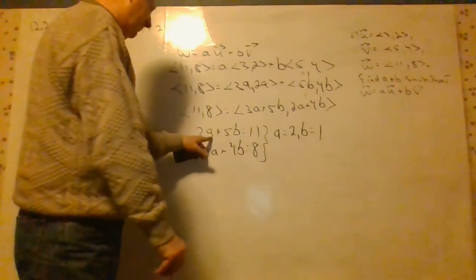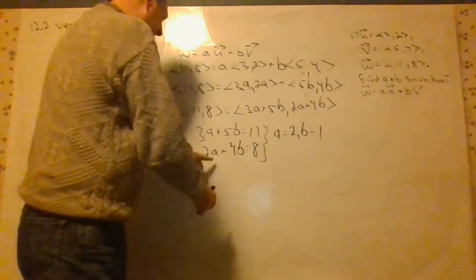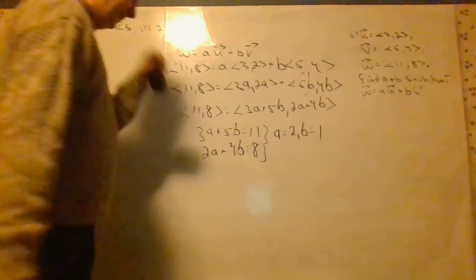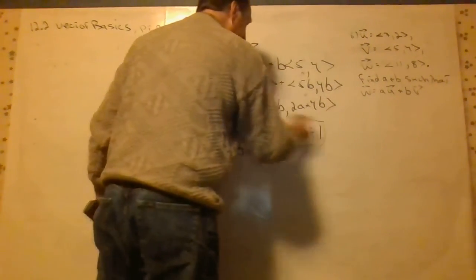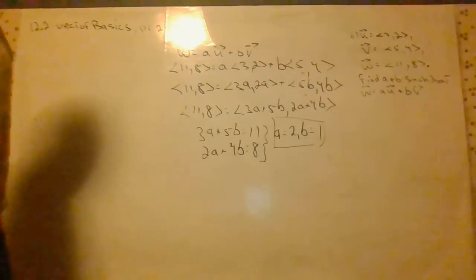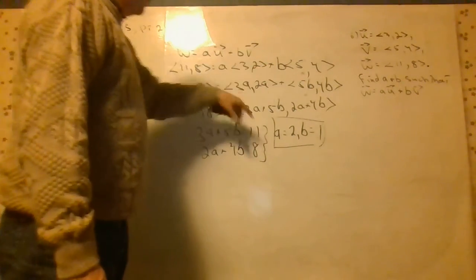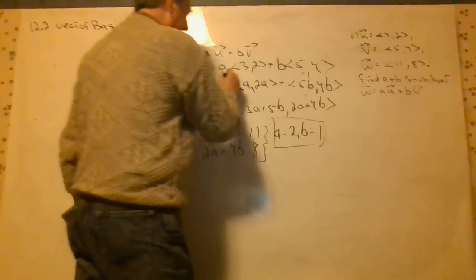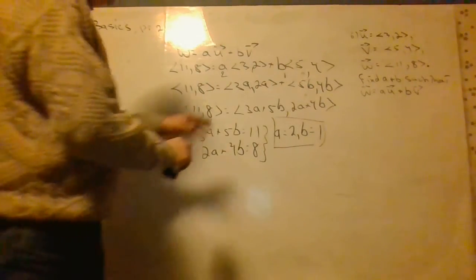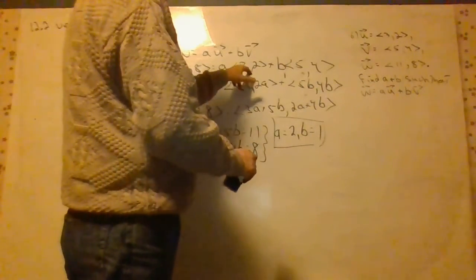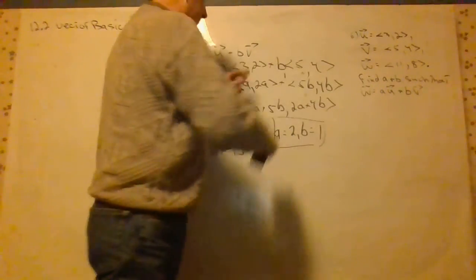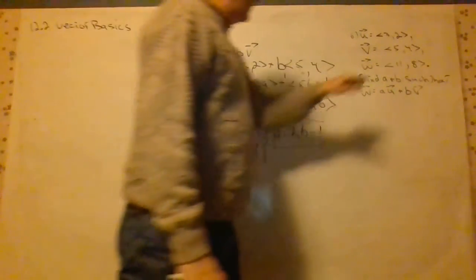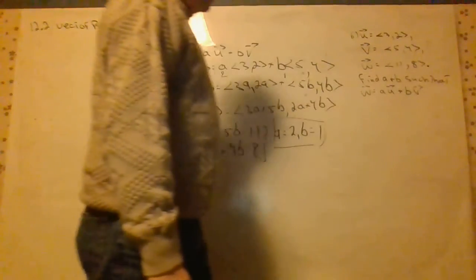But you can check. Put a 2 in here and a 1 in here, you get 11. Put a 2 and a 1 in here, you get 8. So we found a and b. Now, of course, you can check. You can plug a and b in. You can put a 2 in here and put a 1 in here. I'll leave that to you. If you multiply by 2, you get (6, 4) plus (5, 4). 6, 4 plus 5, 4 gives you what? 11, 8. And it does check.